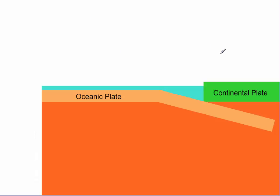The second feature at a subduction zone occurs when magma in this region is put under pressure. The oceanic plate is wet, and when that water is added to the magma it makes it less dense. This magma tries to escape, finds any crack it can, and you end up with volcanoes.